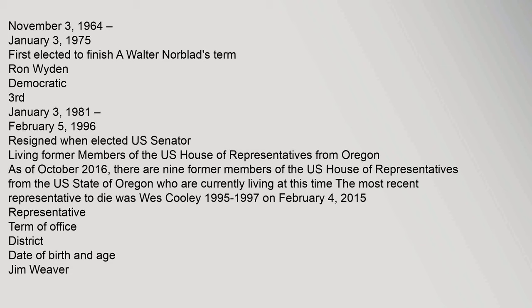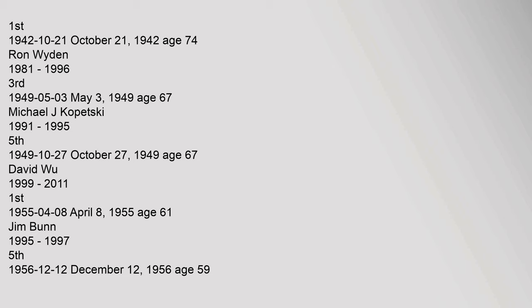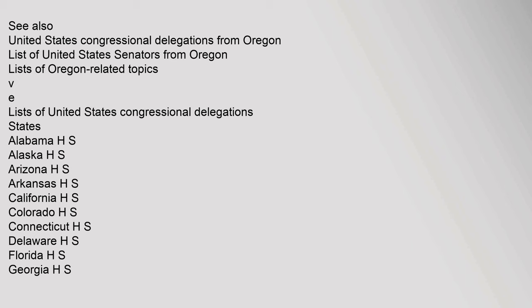Living former members of the U.S. House of Representatives from Oregon: as of October 2016, there are nine former members of the U.S. House of Representatives from the state of Oregon who are currently living. The most recent representative to die was Wes Cooley, 1995 to 1997, on February 4, 2015. Representative term of office, district, date of birth and age: Jim Weaver, 1975 to 1987, 4th, born August 8, 1927.